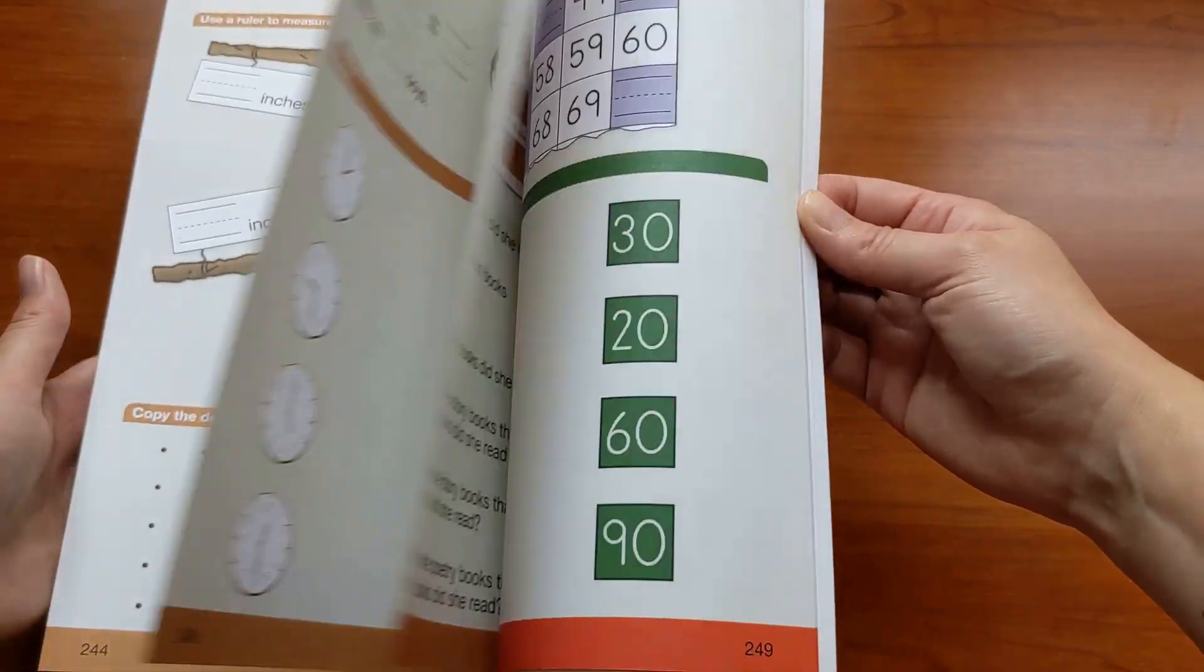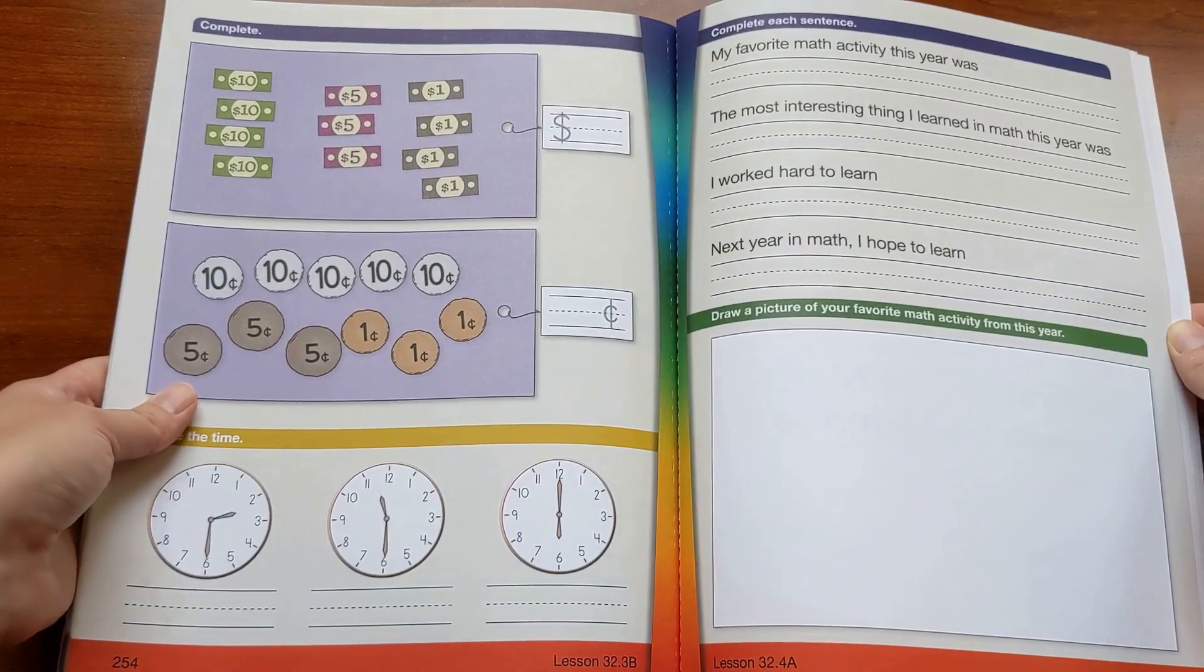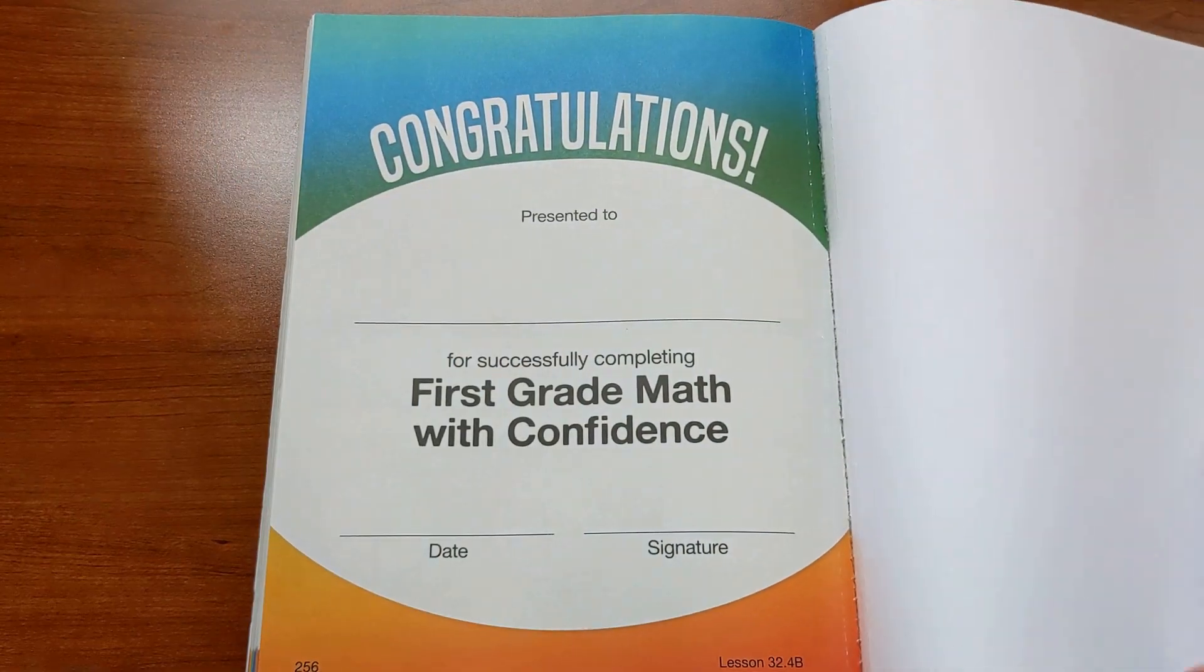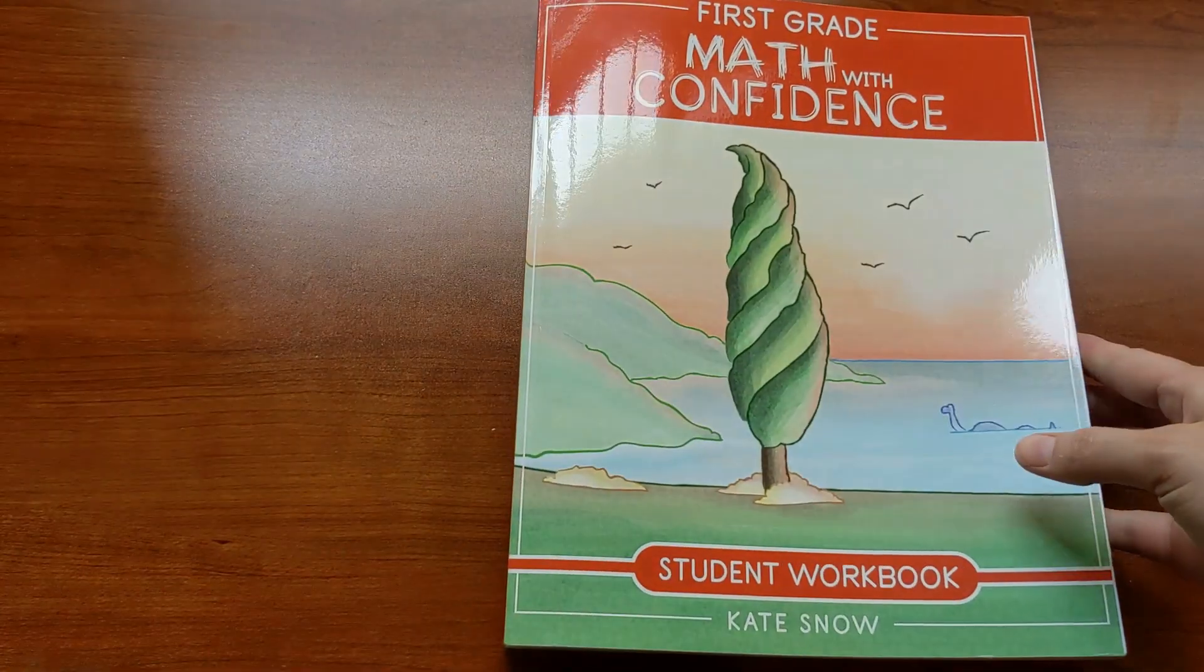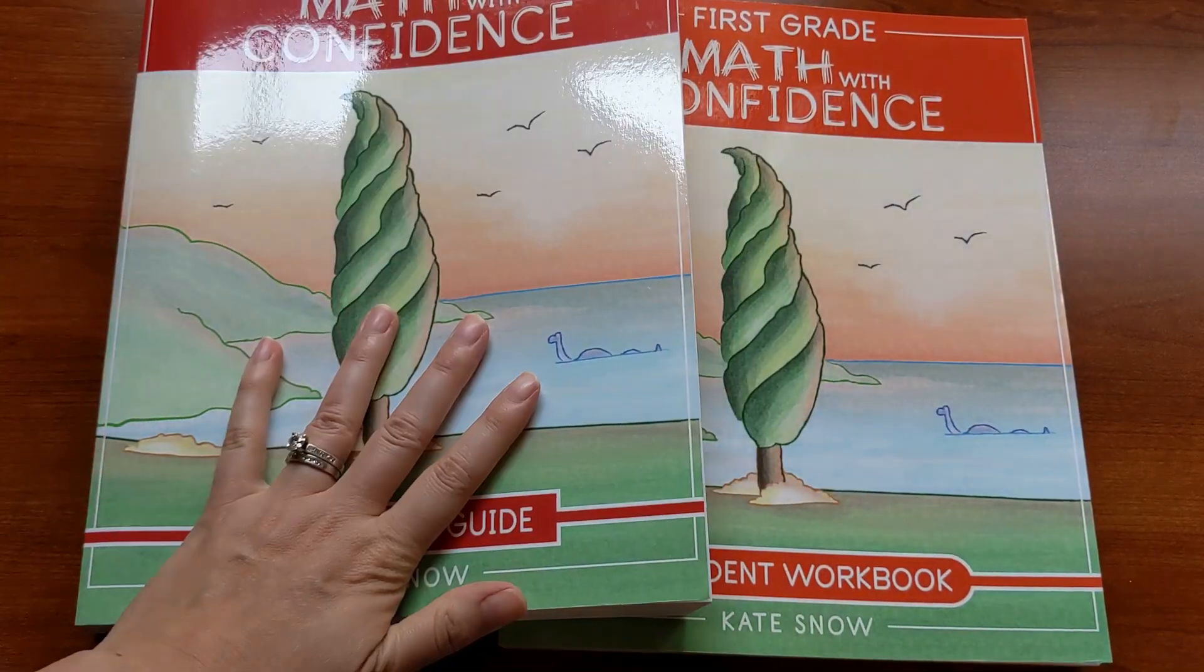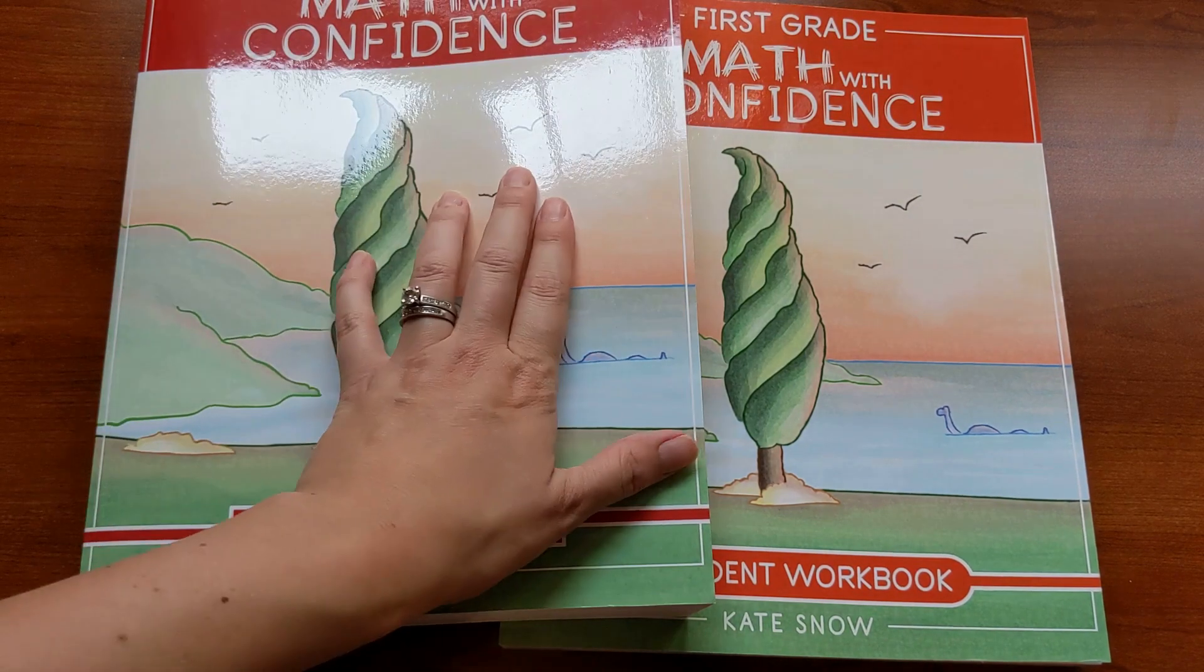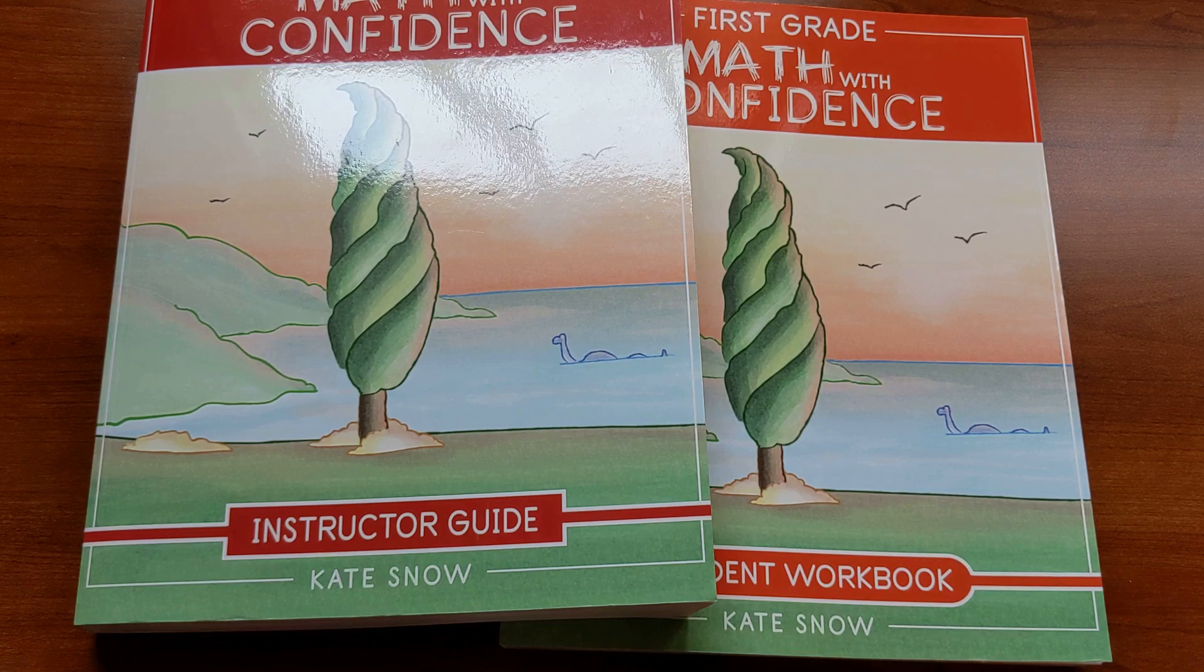And then at the end of the year, we get to a review unit. And then there's a little chance to reflect on the year and a certificate to present to your child for successfully completing first grade math with confidence. So that's the overview and flip through of first grade math with confidence, the instructor guide and the student workbook. I hope that you and your first grader just have a wonderful year enjoying math together. Happy math.